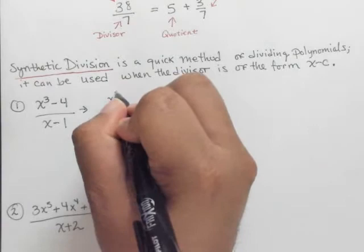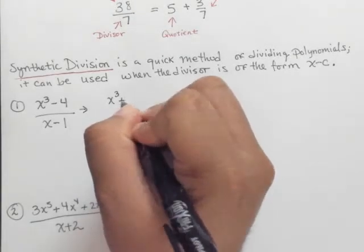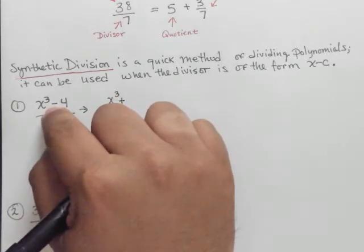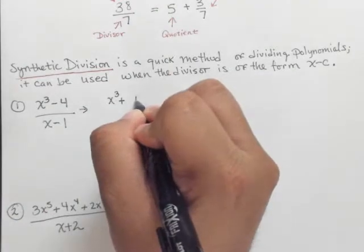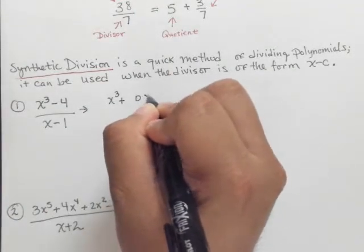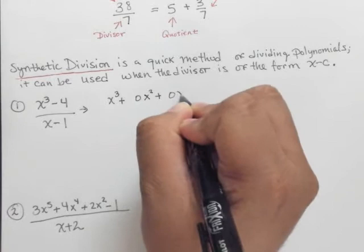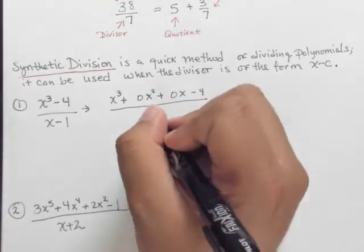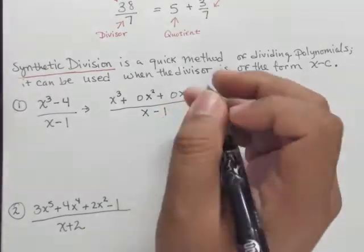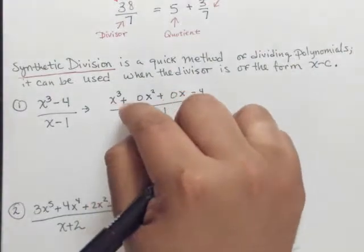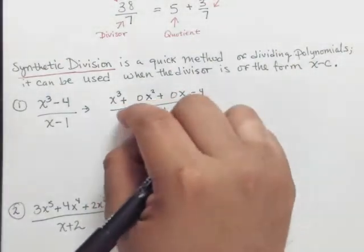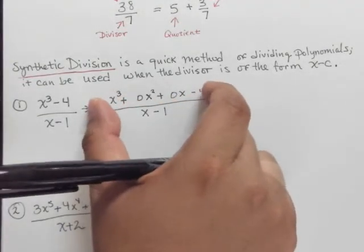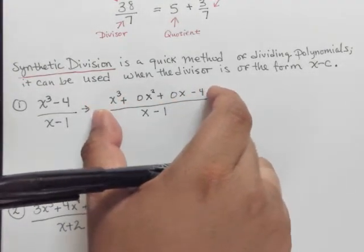So here we would have x cubed plus, now notice that there's x squared and an x term missing. So we're going to kind of fill in the blanks here. I'm going to write it as 0x squared and 0x and minus 4. The thing is that if we do the synthetic division, we need to fill in a space for every element, or a space for every term in descending order. So it has to be in order, that's another important concept to note here.